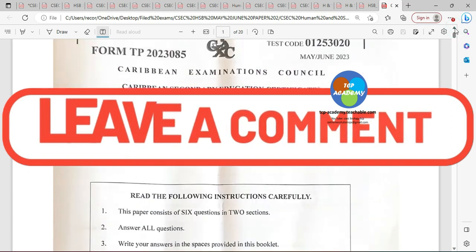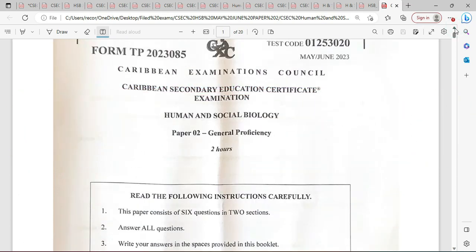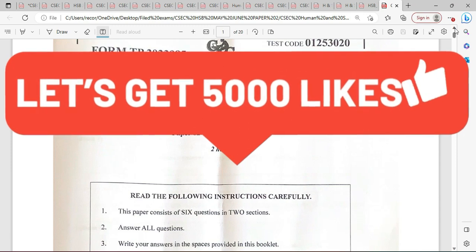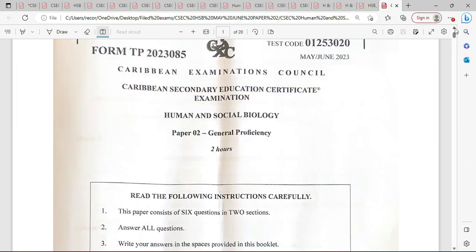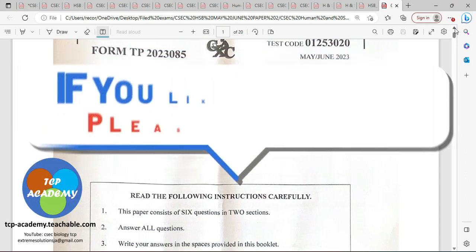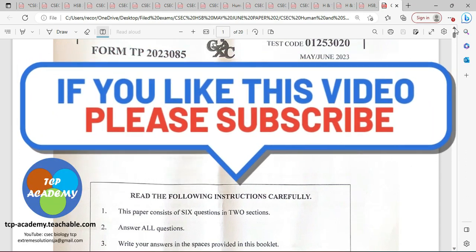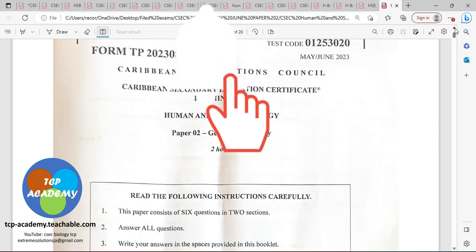We got a paper today and we decided we're going to be sharing with you the 2023 Human and Social Biology paper for May June. It's paper two. Now if you have not liked, shared, or subscribed, it is time for you to do so now. When you subscribe, please click that notification bell and select all so you'll be notified of new publications.